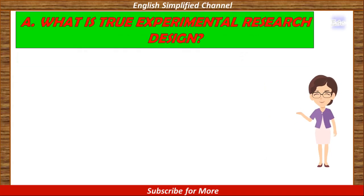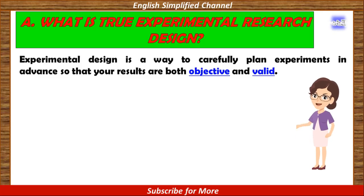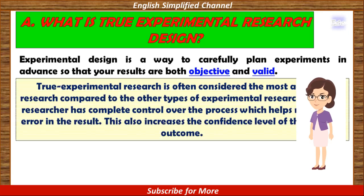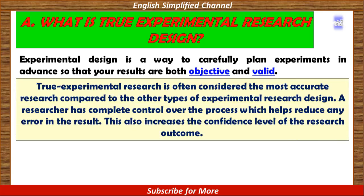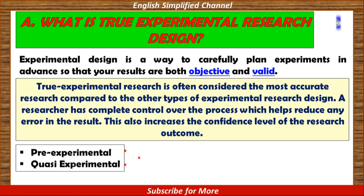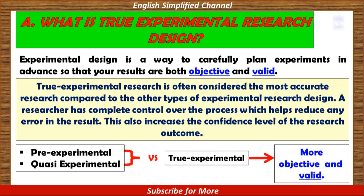Part A: What is true experimental research design? An experimental design is a way to carefully plan experiments in advance so that your results are both objective and valid. True experimental research is often considered the most accurate research compared to other types. A researcher has complete control over the process, which helps reduce any error in the result and increases the confidence level of the research outcome. Compared to pre-experimental and quasi-experimental, true experimental is the best, as it is more objective and valid.